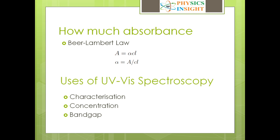UV visible spectroscopy can be used for characterization. As discussed, there are four types of electronic transitions that we can analyze. It is not compulsory that every sample shows all four transitions — it depends on the type of sample and which transition it exhibits. UV visible spectroscopy can also be used to determine the concentration of the sample and the band gap of the sample, which we will discuss in the future.